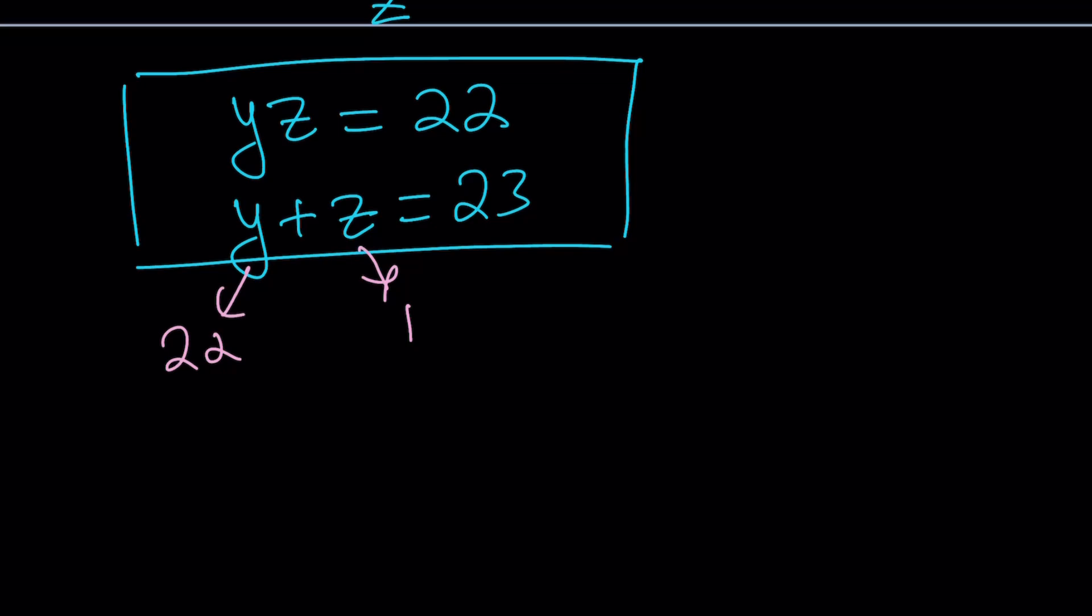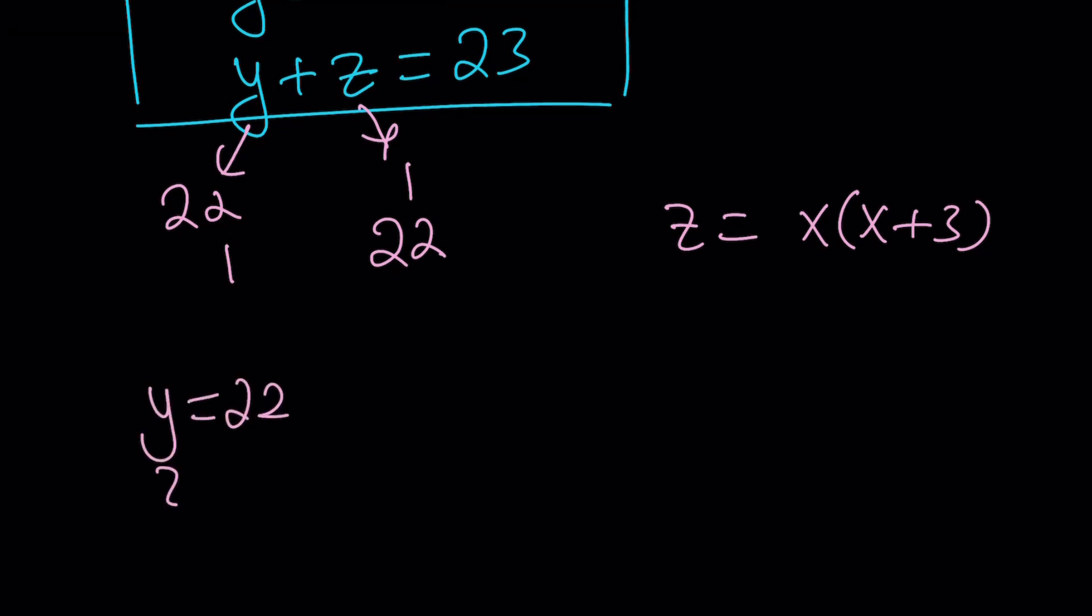So we got the y value right away. Either y is 1 and z is 22, or y is 22 and z is 1. But what is z? z is x times x plus 3. So we get the following system. y is 22, z is 1, or y is 1, z is 22.